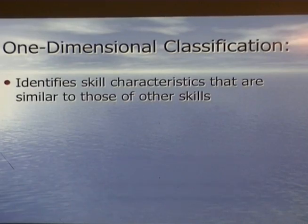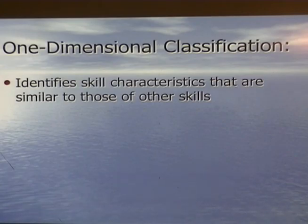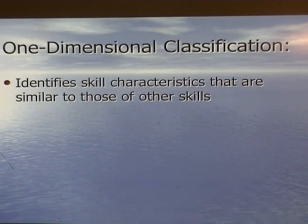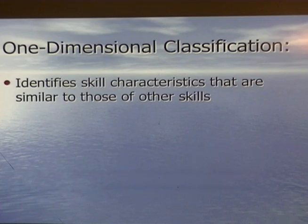We have two versions of classification systems. The one-dimensional one is very simple — it's been around for a long time. It's very useful to understand certain characteristics about the skills that you're trying to teach. The classification systems give you a way of identifying skills based upon these characteristics, and which skills group together. What we find when we look at elemental learning research is that depending on the type of skill, the way you should teach it, the way you provide practice setups, how often and when you practice, all depends upon how you define the skill.